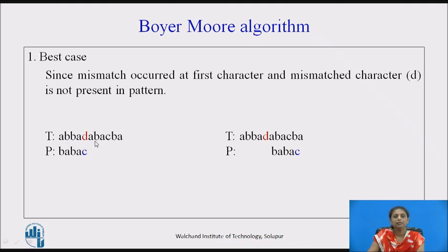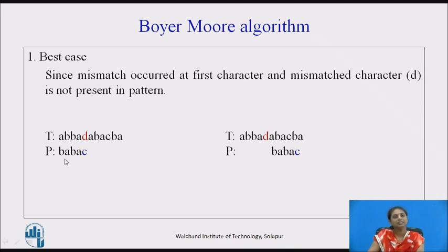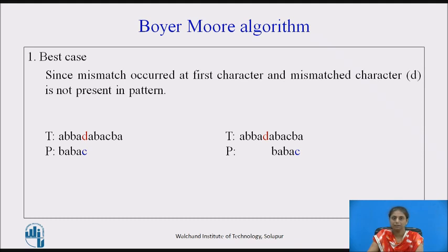In this case, the mismatch character D is not present in the pattern, so there is no point in comparing all the remaining characters. We can safely move the pattern to the right by 5 characters, since the length of the pattern is 5. We then move the pattern and again start comparing from the right. This is the ideal case.